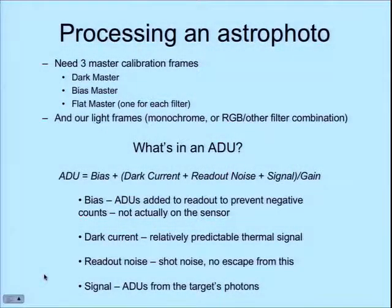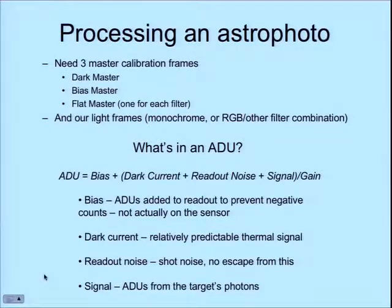To do a good job processing an astrophoto, you're going to need to make three calibration frames: a dark master, a bias master, and a flat master. Then you'll need your signal frames — the actual frames of the object you're interested in — and any color frames as well. In an astronomical camera, bias is just a count that's added when you start reading out your sensor, so you start out with a baseline of 100 counts. They do this so they don't go negative and have to worry about signed bits.